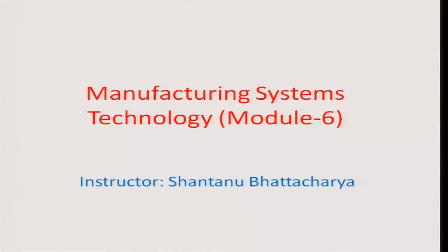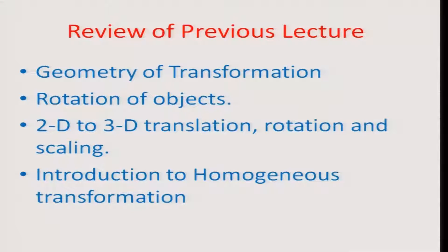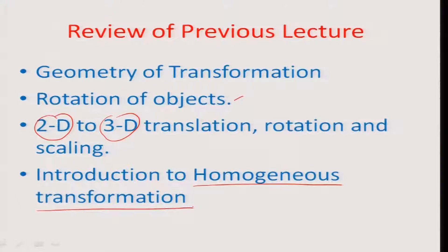Hello and welcome to module 6 on manufacturing systems technology. Quick recap of what we did in the last module: we talked about geometric transformation, specifically rotation of objects in two-dimensional space. We also discussed how 2D transformation converts into 3D transformation, covering translation, rotation, and scaling. We introduced why homogeneity is needed — to use matrix multiplication throughout rather than having addition for translation and multiplication separately for rotation and scaling, in the interest of less expensive and easier computing. This created a need for the homogeneous transformation process.